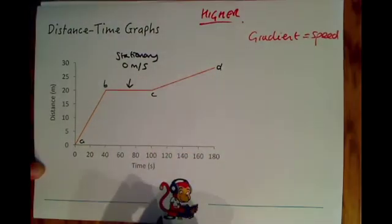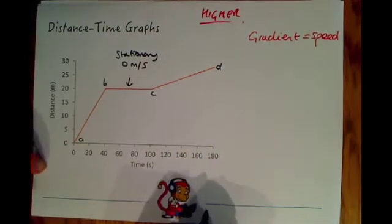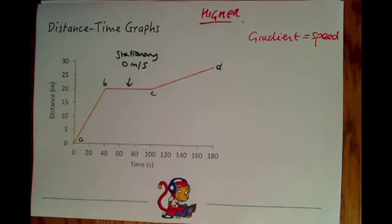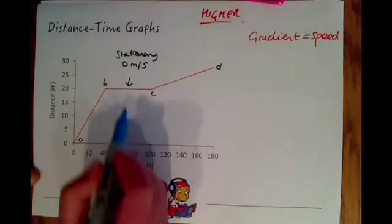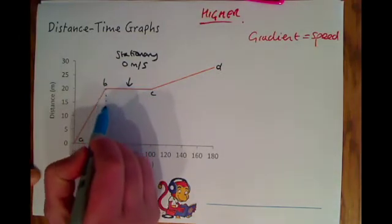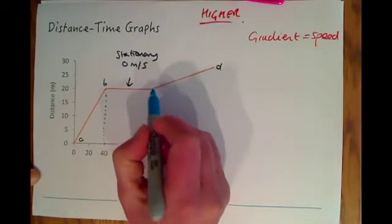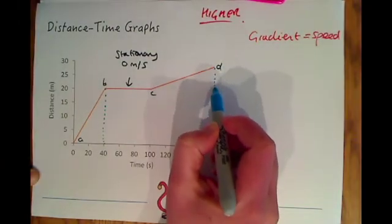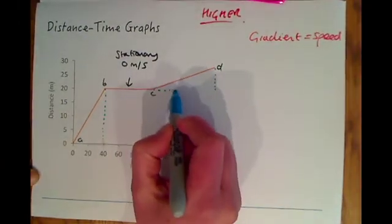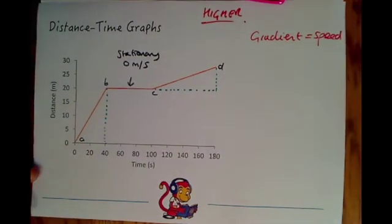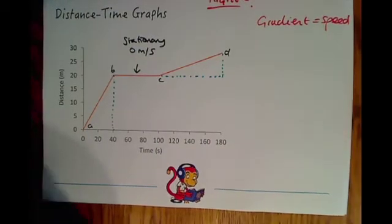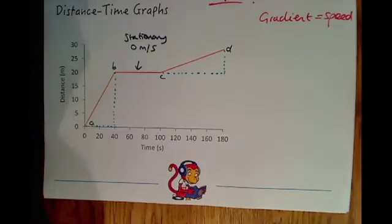All we need to do is calculate the gradient of the line. To do that we have to draw on some triangles to help us. This one I'm going to complete the triangle by taking it down to 40 and over here I need to make a triangle to help me here. So draw these on in the exam, don't try and guess the numbers. If you draw it on it makes things a little bit easier. In maths you may well have drawn these triangles on before and it's exactly the same in science.